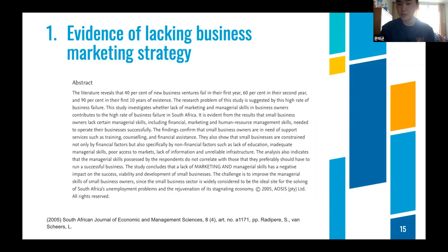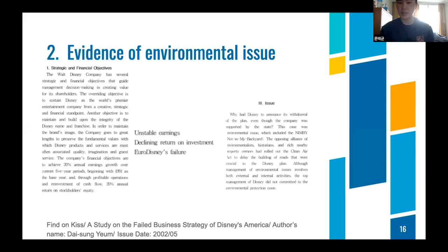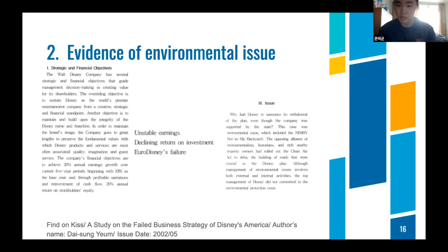That is an example of evidence of lacking business marketing strategy — I found it on Scopus, which is a reliable website. The second issue is environmental problems. For example, Disney — Walt Disney — might seem surprising because Disneyland is the most successful theme park business. But when they started their first business, they planned on building a big theme park but faced many threats: unstable earnings, declining return on investment, and Euro business failure. The critical problem was environmental issues, including NIMBY opposition and an opposing alliance of environmental systems and rich nearby property owners.